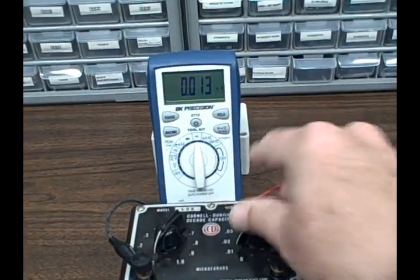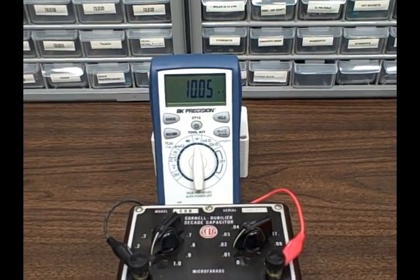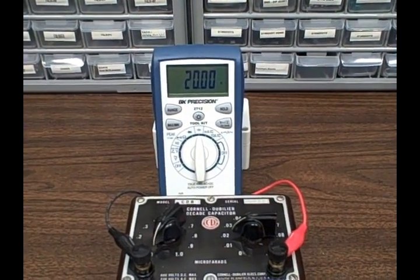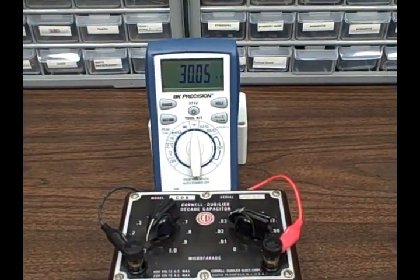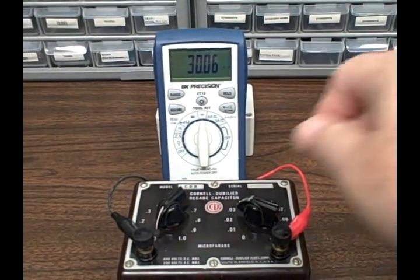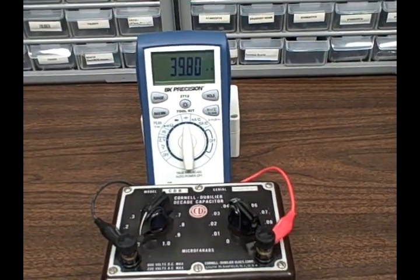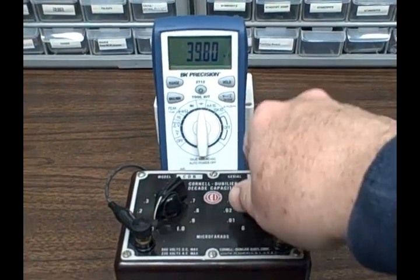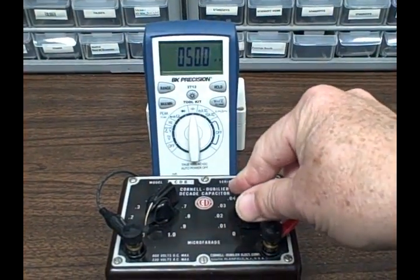Now going to the 0.01 microfarad position and we get 10.05 nanofarads. 0.02 microfarads, we're getting 20 nanofarads. 0.03 microfarads, I'm getting 30.05 nanofarads. 0.04 microfarads, I'm getting 39.80 nanofarads. 0.05 microfarads, I'm getting 50.0 nanofarads.